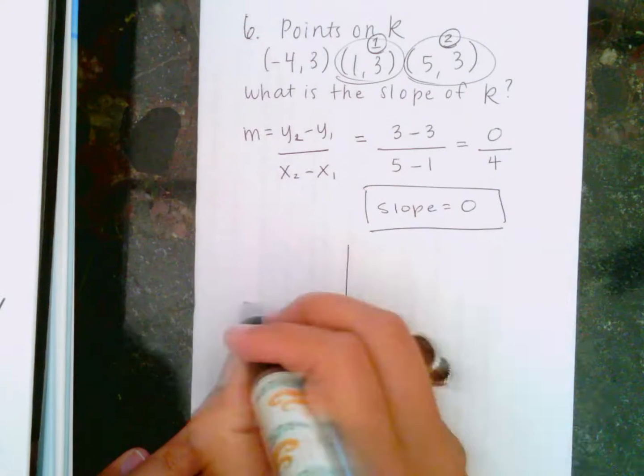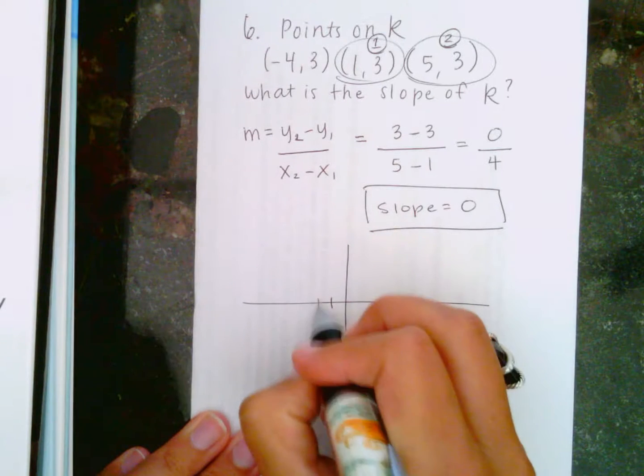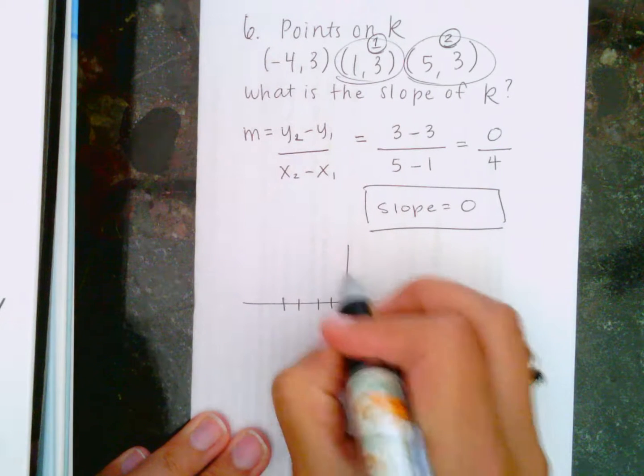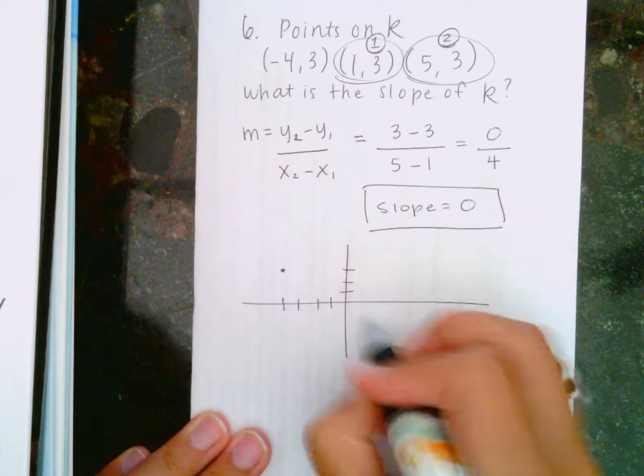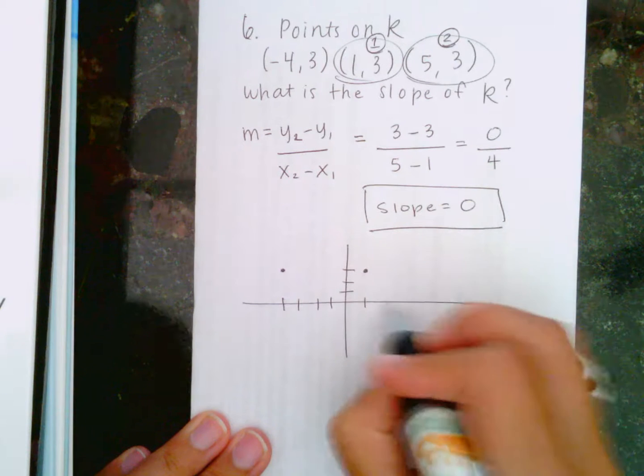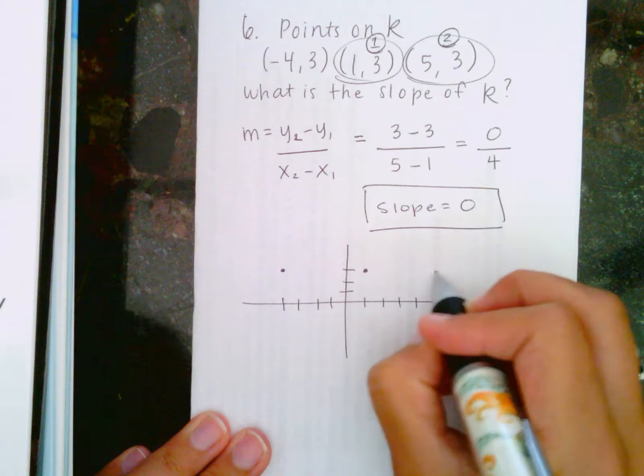If you were to look at these points on a graph, we've got negative 1, 2, 3, 4, 3, 1, 3, and 2, 3, 4, 5, 3.